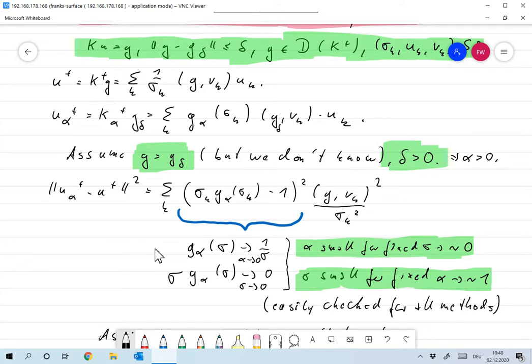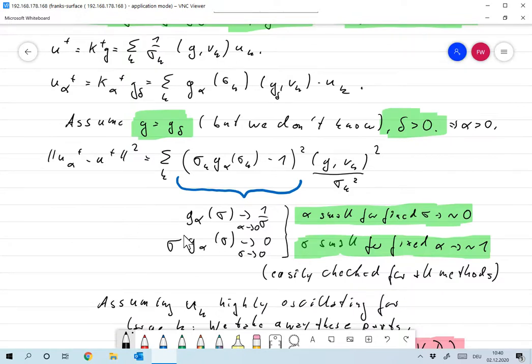Let's discuss this term once again. For a moment fix sigma. We know due to our assumptions on g alpha that g alpha of sigma converges to one over sigma for alpha going to zero, and for fixed alpha we have that sigma times g alpha of sigma goes to zero.